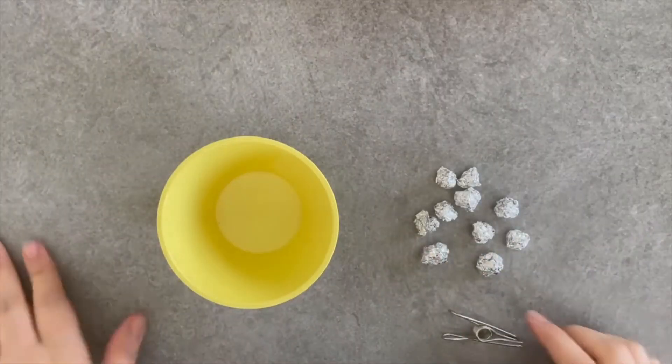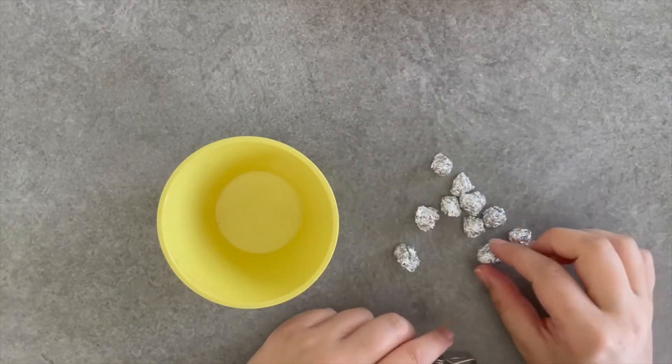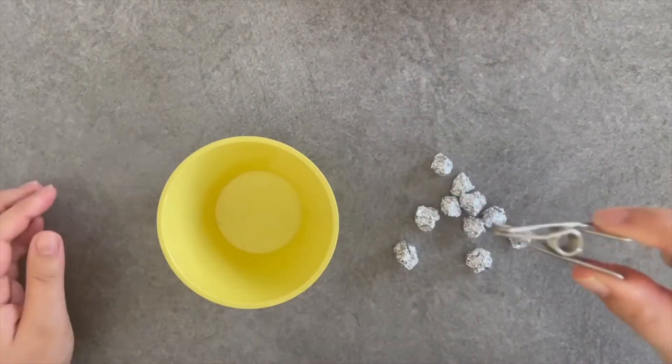What you need is your bowl, one peg, and all ten of your balls. Let's go. I've got ten little aluminum foil balls and I've got my peg.